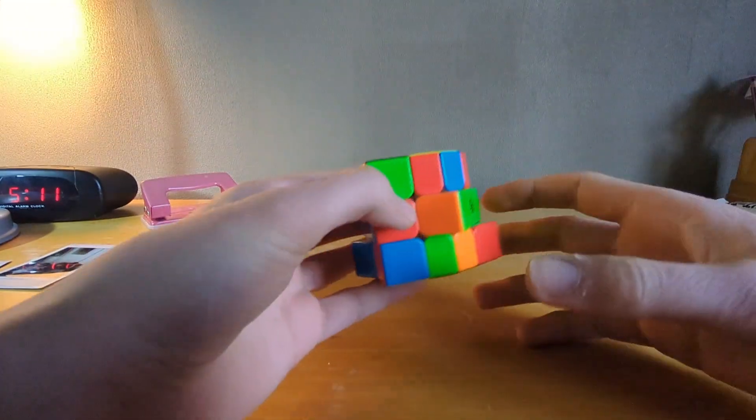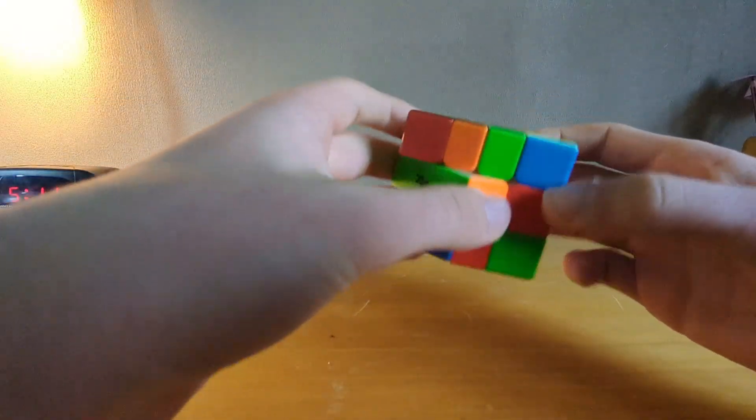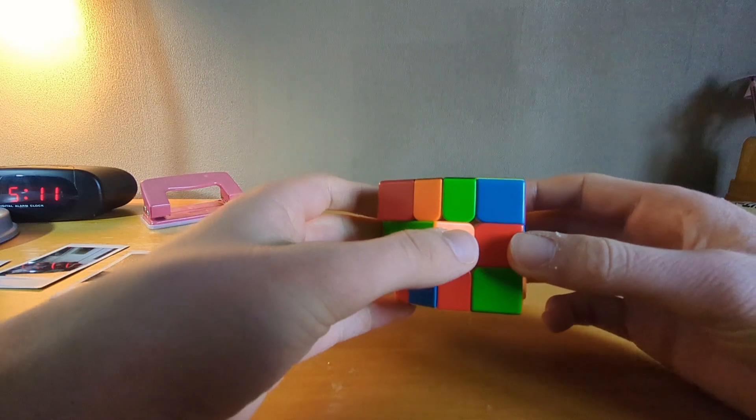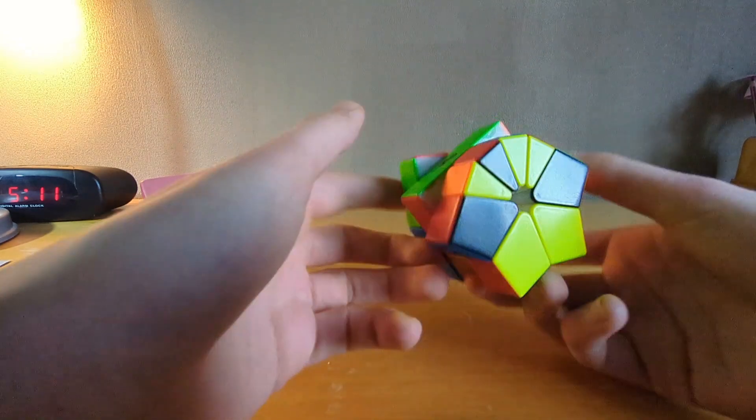That last solve was a 3.88, but this one was a 5. It was the worst solve of the average. It's kind of just not very interesting, but you know at this point I was on a 4.2 AO5, and that's already better than my PB, so of course I was trying to get really good solves.